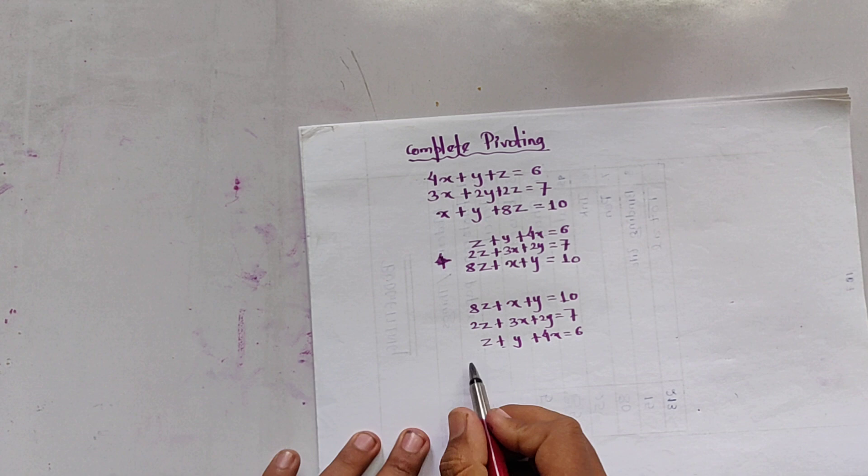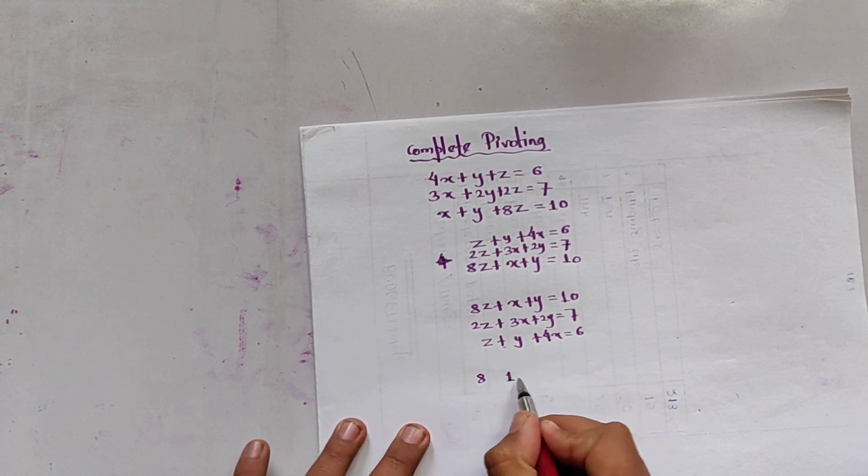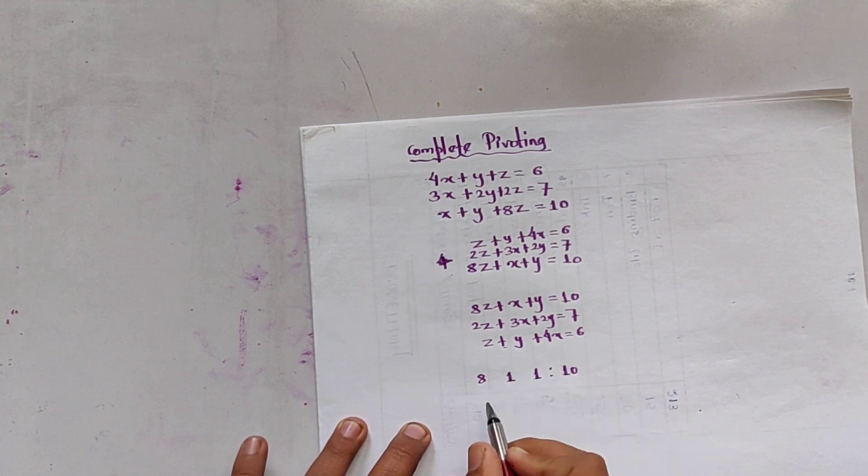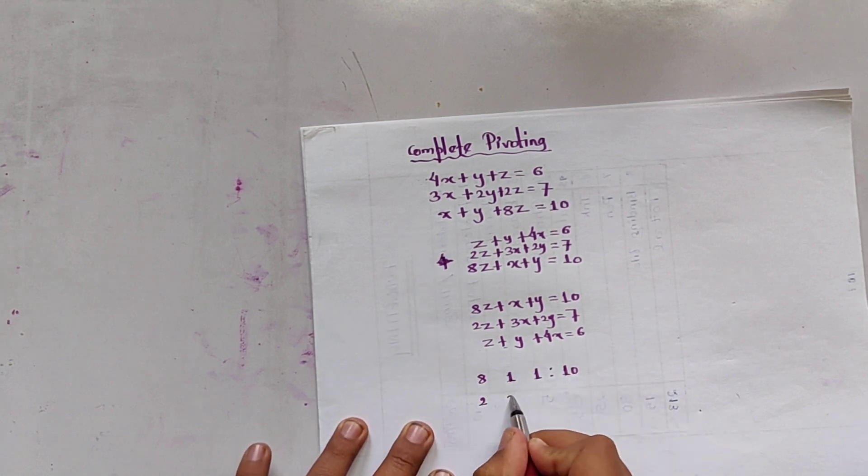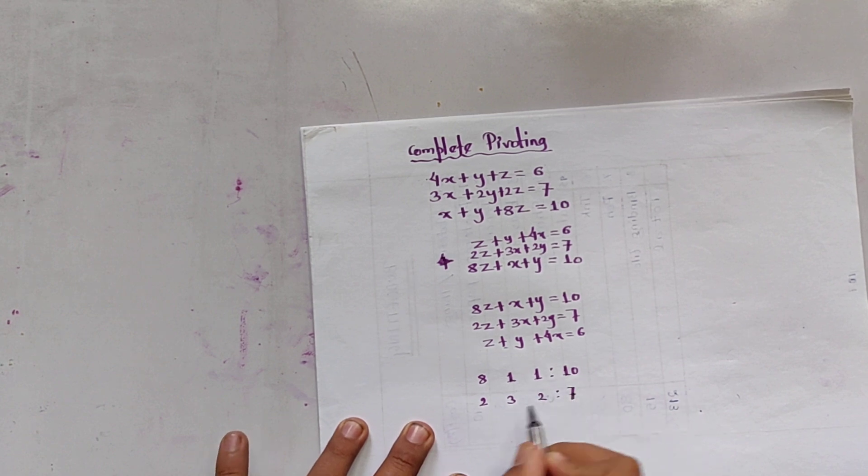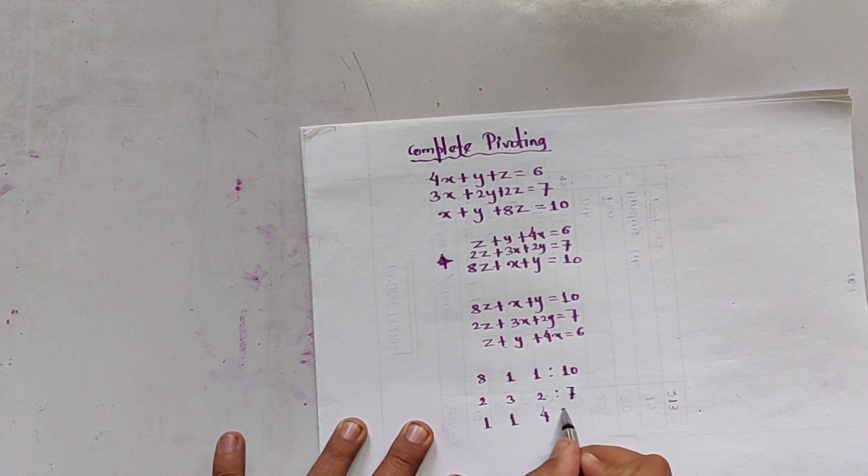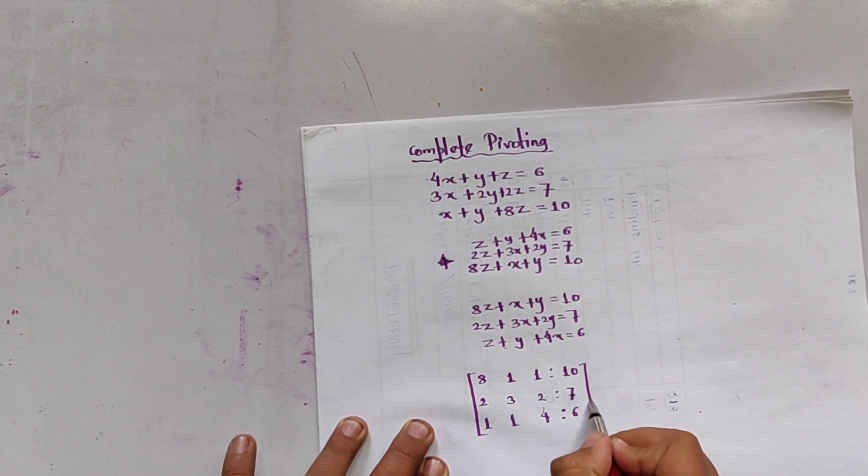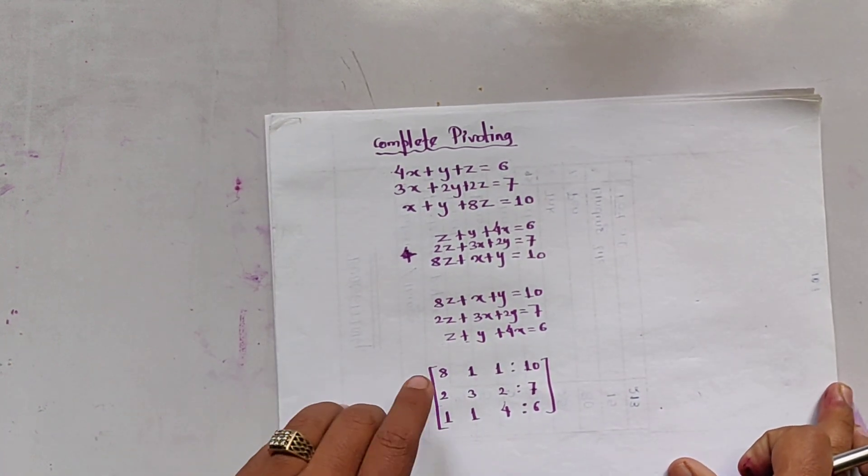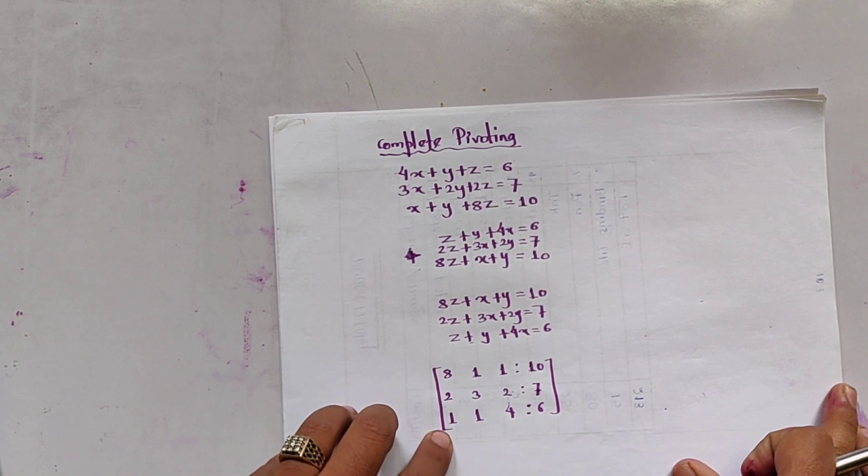Now the augmented matrix becomes [8, 1, 1, 10], [2, 3, 2, 7], [1, 1, 4, 6]. Now we use the normal Gaussian method, so we have to convert this to 0 and this to 0.